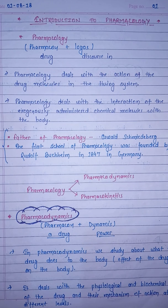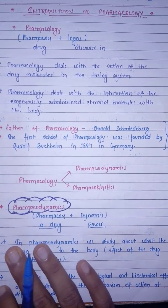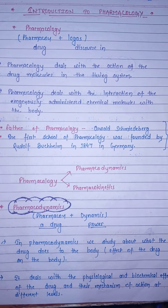There are two divisions of pharmacology: pharmacodynamics and pharmacokinetics. Pharmacodynamics means the power of the drug. In pharmacodynamics we study what the drug does to the body, that is, what is the effect of the drug on the body.